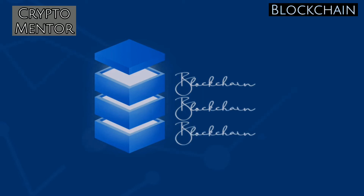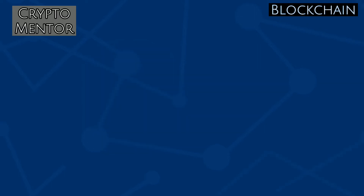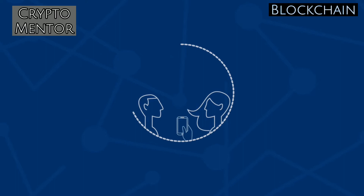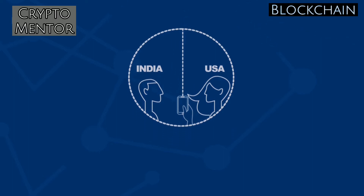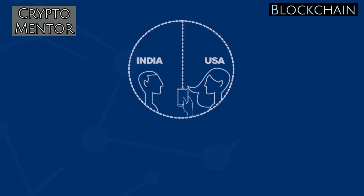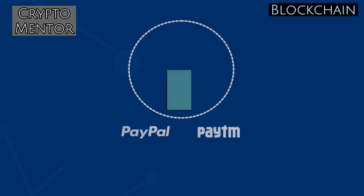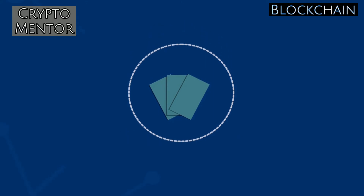Each transaction on a blockchain is secured with a digital signature, so the data stored on the blockchain is tamper-proof and cannot be changed. Suppose you are looking to send money to a person in a different location — the options could be a bank or applications like PayPal. These options involve third parties to process the transaction, due to which an extra amount is deducted as a transferring fee.